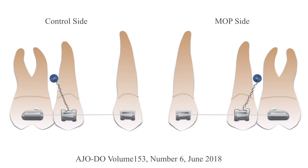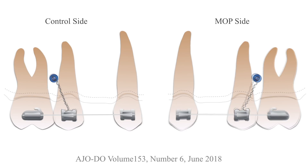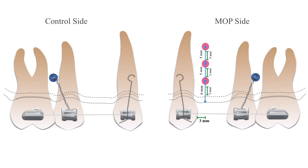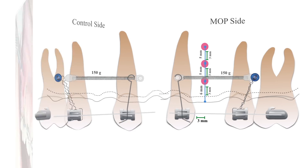After six months with complete healing of the extraction socket and reaching a 0.019 x 0.025 stainless steel wire, we performed three MOP perforations on the buccal bone distal to the canine on the MOP side. A power arm was then bolted on the canine bracket and the canine was retracted using a closed coil spring near the center of resistance with 150 grams of force.